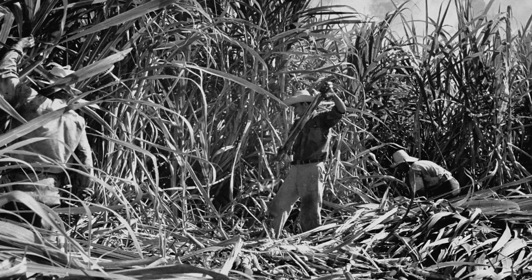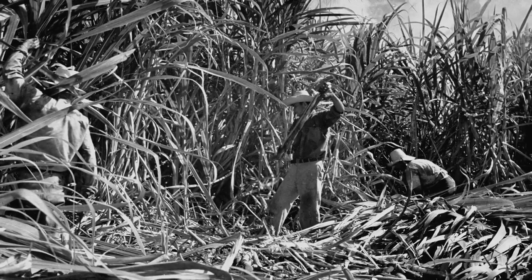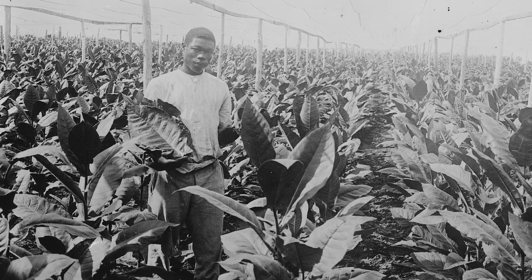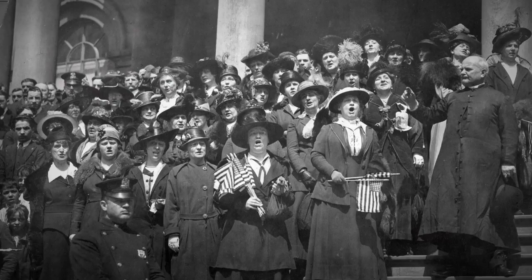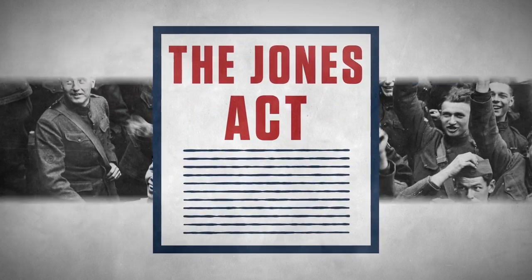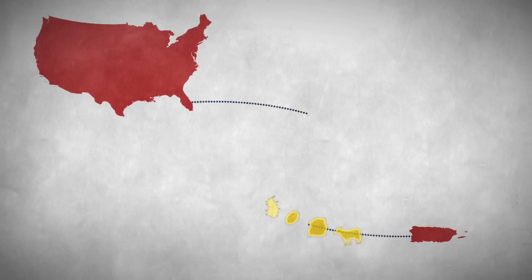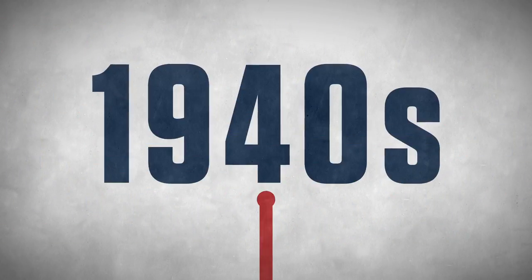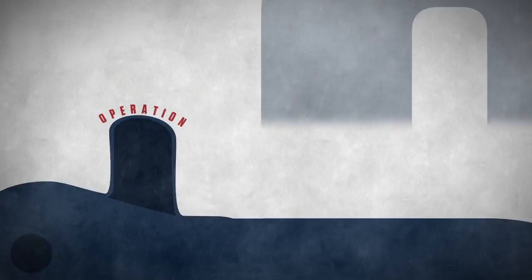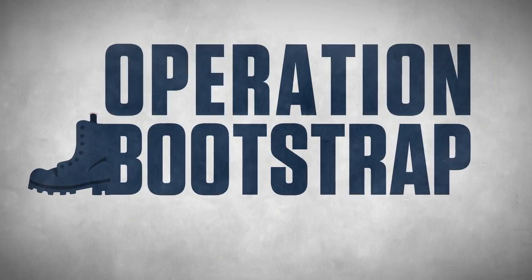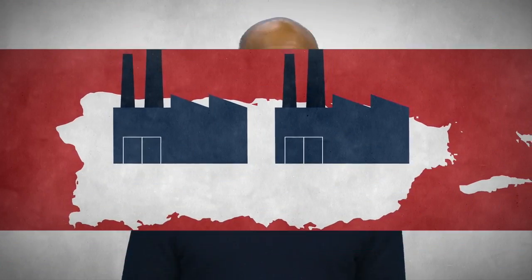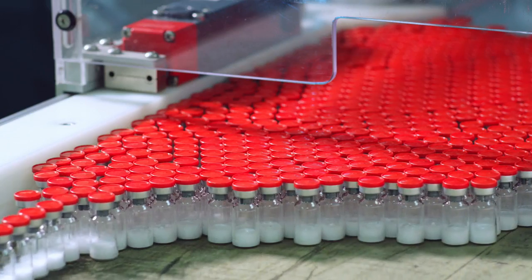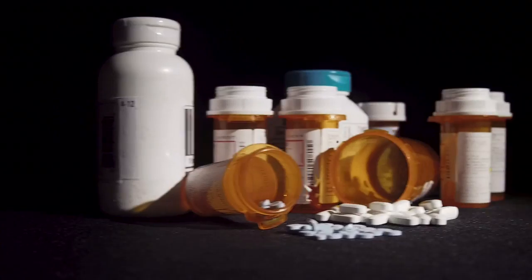Under U.S. rule, Puerto Rico continued its plantation economy, with sugar being the main crop. But the economy faced changes in 1920, when in the wake of World War I, the Jones Act made goods expensive to transport to and from Puerto Rico, which made prices generally higher on the island. In the 1940s, the U.S. began Operation Bootstrap, a series of economic initiatives to industrialize Puerto Rico's economy. The initiatives were successful — cheap labor and tax laws attracted American manufacturers. Today, Puerto Rico is a leading producer of high-tech equipment and American pharmaceuticals.